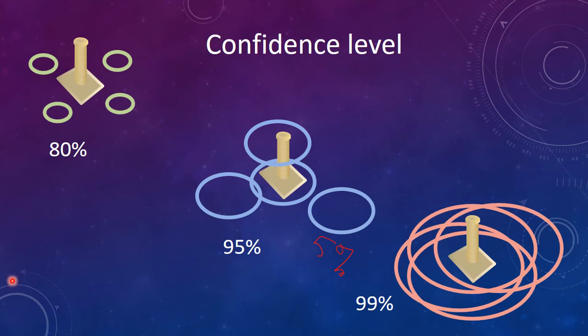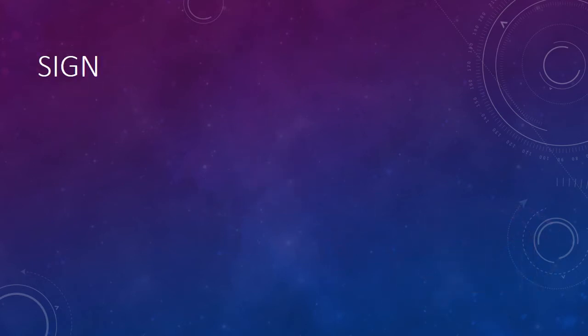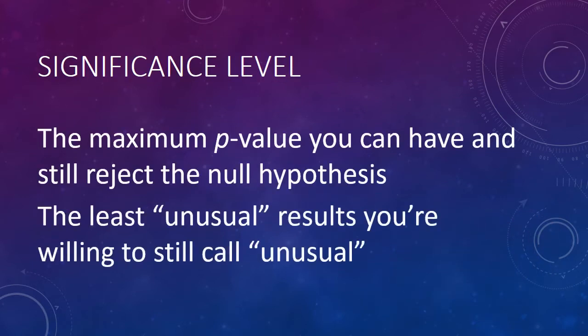In statistical tests, we make a similar choice. Instead of calling it a confidence level, we call it a significance level. This is the maximum p-value that you decided that you can have and still reject the null hypothesis. Or in other words, it's the least unusual you're willing to go and still call the results unusual. We've been using 0.05 for our significance level. That is, we decided that the results were unusual when the p-value was less than 0.05.